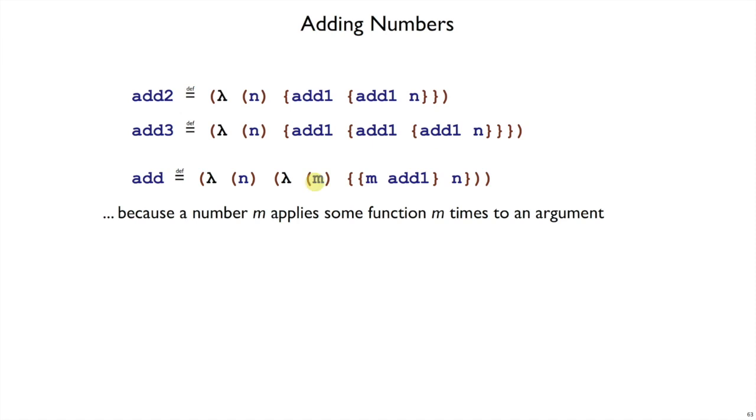Fortunately, we can use the same trick we had to solve the problem before. We know that m is a function. Since it's a number, it's a function that takes another function, like add1, and would apply that function m times to some other argument. So if we take n and m times we add 1 to it, then we will have ended up adding m and n together.